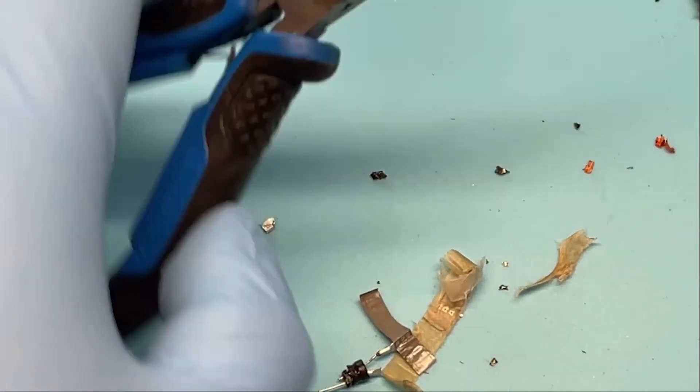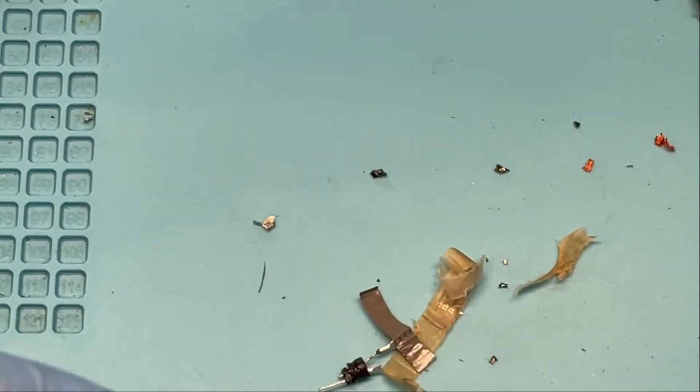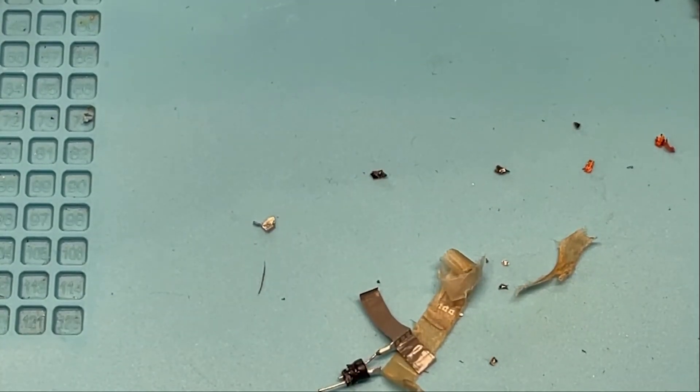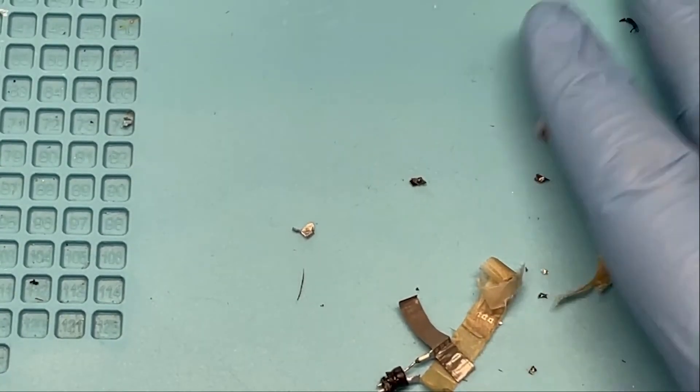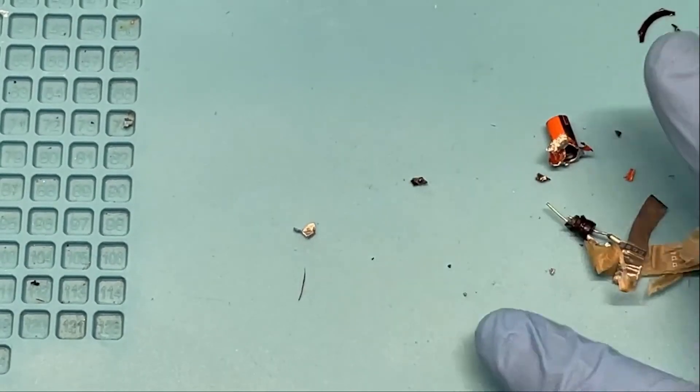But that is it. That's what's inside a capacitor. Again, you've got the paper and then the foil that's covered with the aluminum oxide dielectric, which creates a dielectric, rather. And then the leads. And that's the inside of the capacitor.